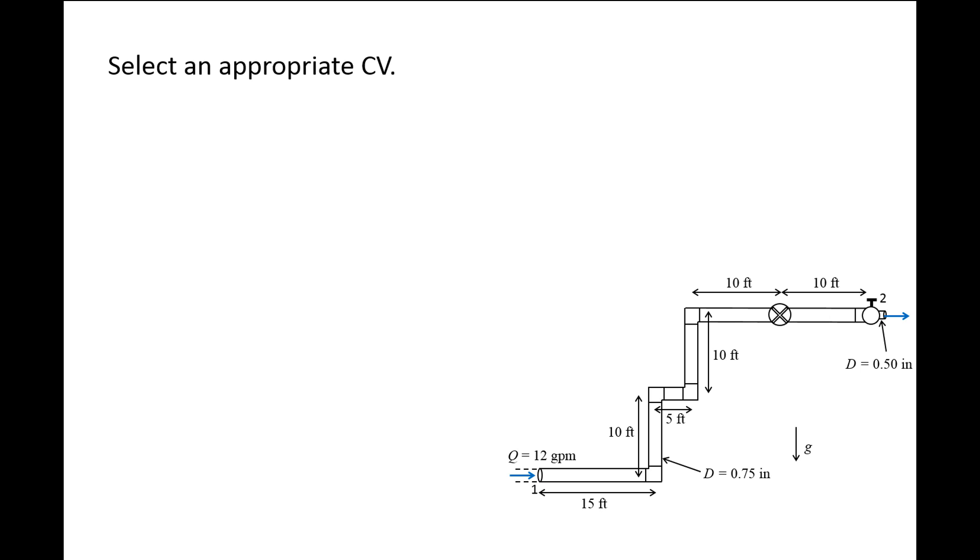The first step of solving any pipe flow problem is to select an appropriate control volume. Since we want to know the gauge pressure at 1, this is a natural choice for the inlet to the control volume. The outlet of the faucet is a good choice for the outlet of the control volume because we can find the velocity, pressure, and elevation at that location. We now complete the rest of the control volume, making sure to enclose all pipes and components that the water flows through.